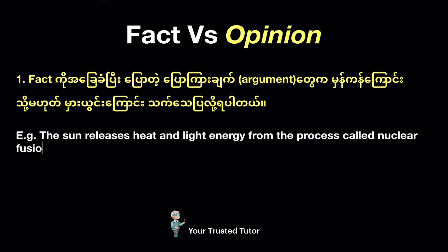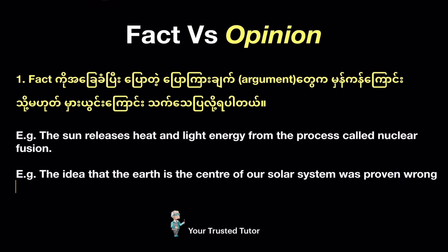Tip number one: a fact can be proven either true or false. For example, look at the given sentences: 'The sun releases heat and light energy from the process called nuclear fusion.' 'The idea that the earth is the center of our solar system was proven wrong by modern scientists.' These sentences are factual because they provide specific information that can be proven right or wrong. This is an important thing to understand in the first place.